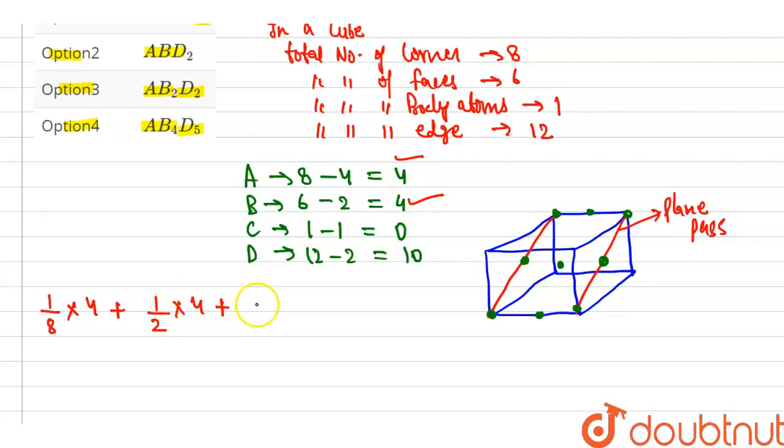Plus, we know the contribution at body is 1, and the total number of body atoms present, that is 0, so multiplied by 0. Plus the contribution at edge, that is 1/4, and atoms present at edge is 10, so multiplied by 10. And that is our A, that is our B, that is our C, and that is our D.